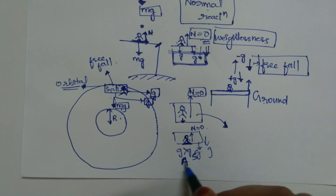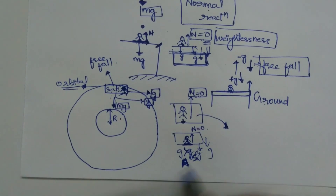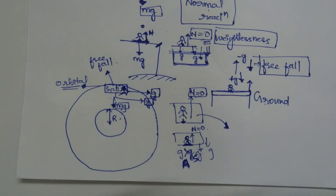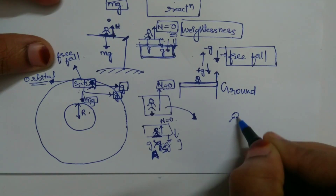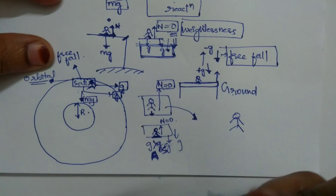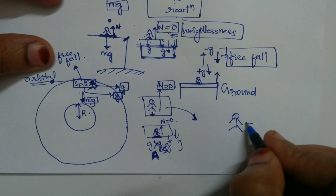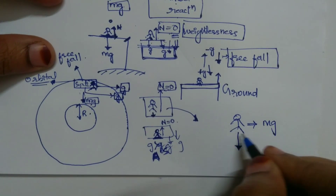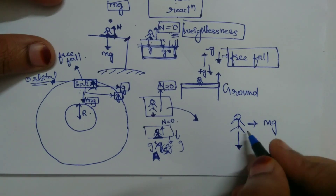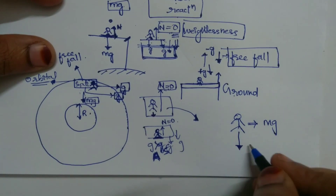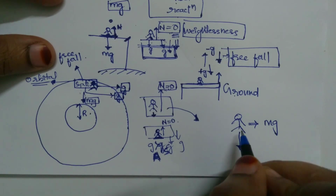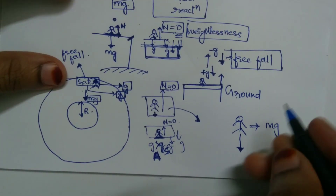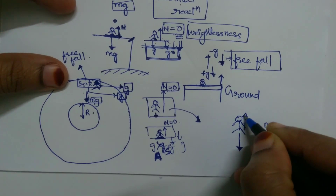Does it mean that you don't have any weight? No, it's not so. The astronaut or any person will have weight. Why? Because the earth is applying gravitational force on them, and because of that acceleration due to gravity, the person will have weight. But they don't feel as if they have weight. Why? Because there is no normal reaction.